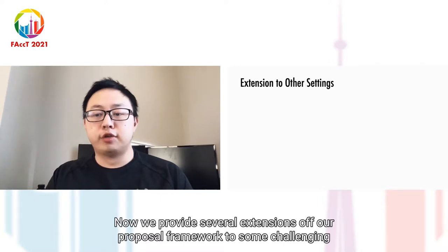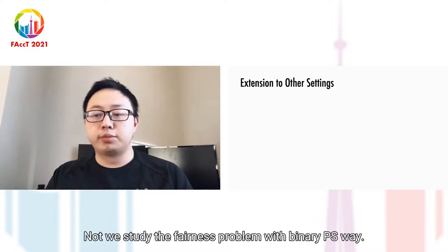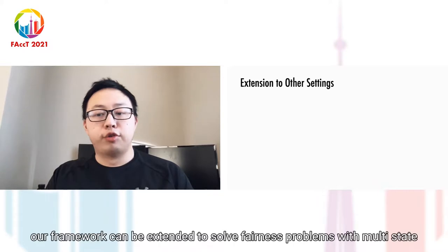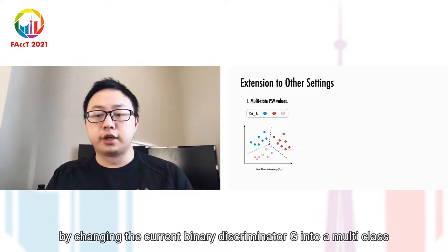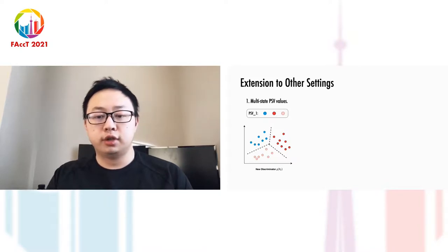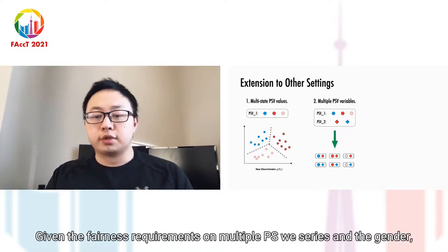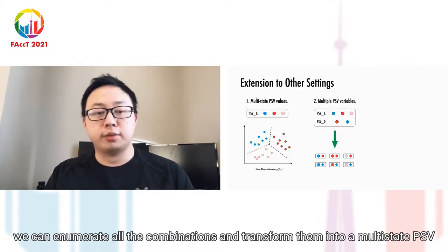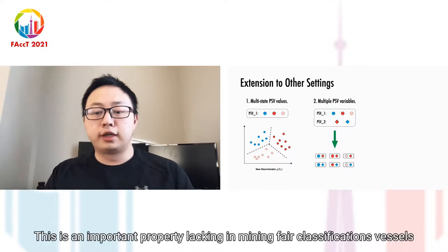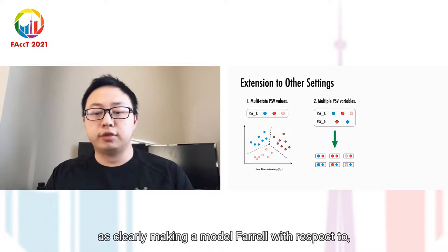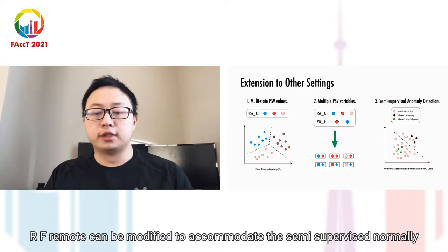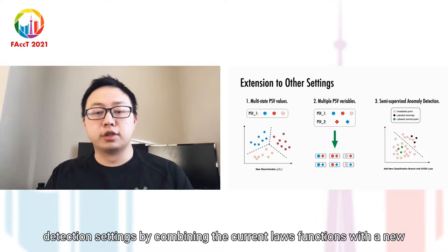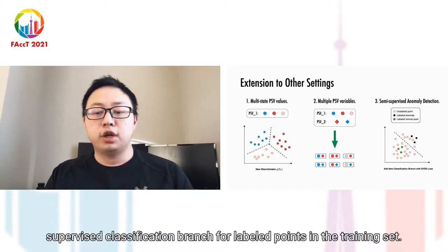Now we provide several extensions of our proposed framework to some challenging settings. We study the fairness problem with binary PSV in this work. However, our framework can be extended to solve fairness problems with multi-state PSV such as education level or nationality by changing the current binary discriminator G into a multi-class classification network. Our framework can also support multiple PSV variables by enumerating all combinations and transforming them into a multi-state PSV variable. This is an important property lacking in many fair classification methods. Lastly, our framework can be modified to accommodate semi-supervised anomaly detection settings by combining the current loss functions with a supervised classification branch.